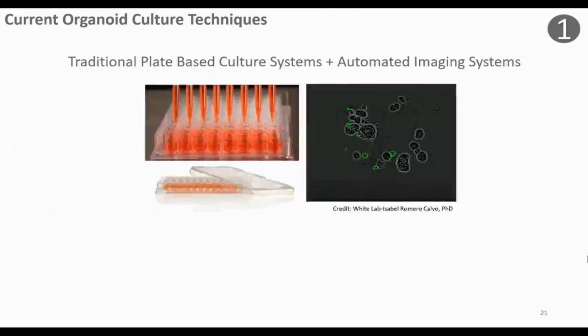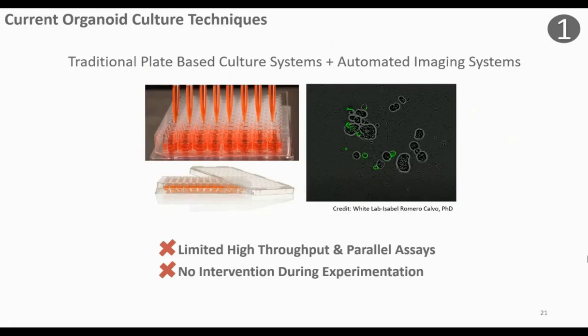Outside the lab, people have attempted various microfluidic devices that are compatible with this hydrogel, but they tend to fall short on being high-throughput and accommodating this large organoid size. As for organoid culture outside of microfluidics, the most common approach is plate-based experiments. People tend to add automation through automated imaging systems, but overall there's still limited high-throughput. With these systems there's no intervention during experimentation, and overall it tends to be very costly and labor-intensive, especially in terms of the number of pipetting steps.